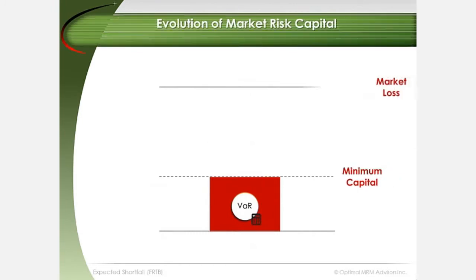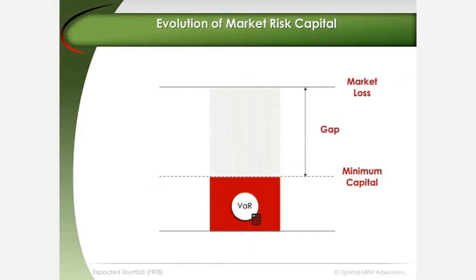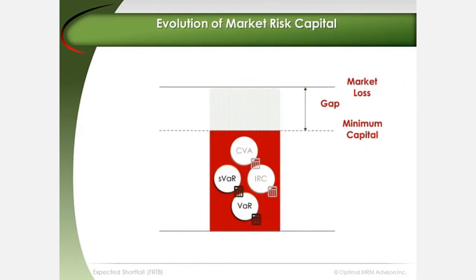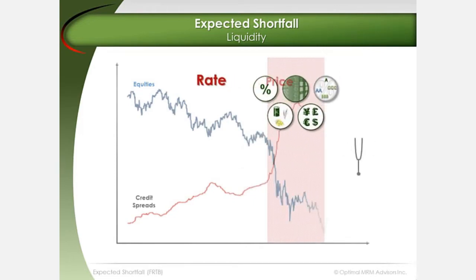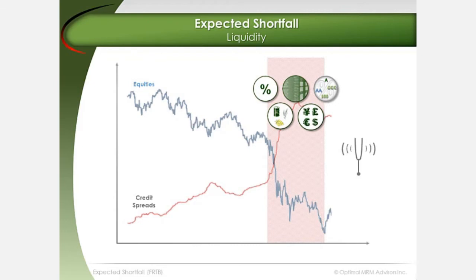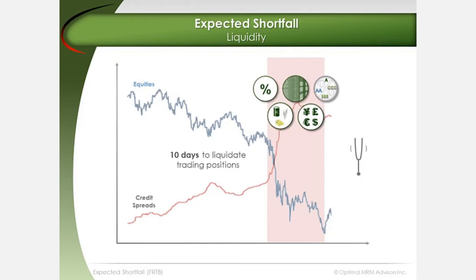The introduction of stressed VAR in Basel 2.5 narrowed the gap in capital held by calibrating to historical stress, but did not factor in the loss of market liquidity during such a period. Prior to FRTB, the market risk capital charge was based on the assumption that all traded positions can be unwound, hedged, or liquidated in 10 days at most during stress, regardless of the type of position. The financial crisis exposed the weakness of this assumption.